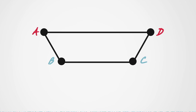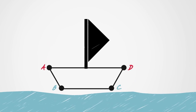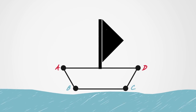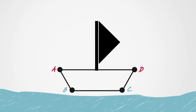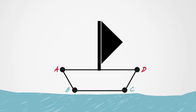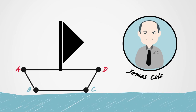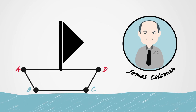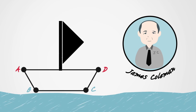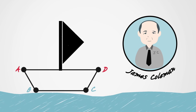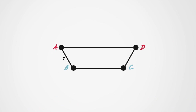The Coleman Diagram, or the Coleman Boat, is an intellectual tool designed to help think about these micro-macro relations. It was made famous by James Coleman, an influential American sociologist. This video will show you how the diagram works.